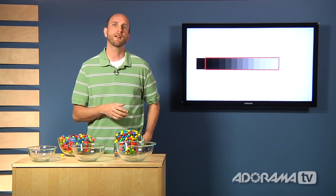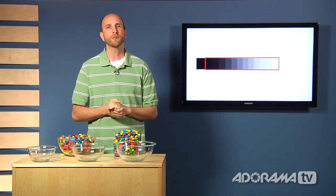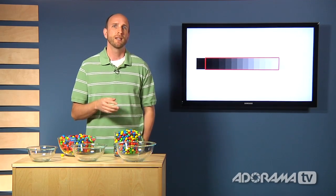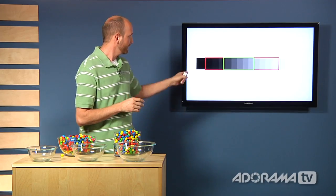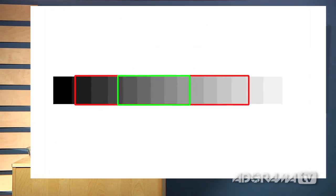In contrast, almost all other digital cameras, well they only capture about 5 stops of light. And that is represented by this little green square. In fact, some cameras can't even capture 5 stops of light so it's a very big difference. There's a huge difference between what we can see and what our cameras can capture.